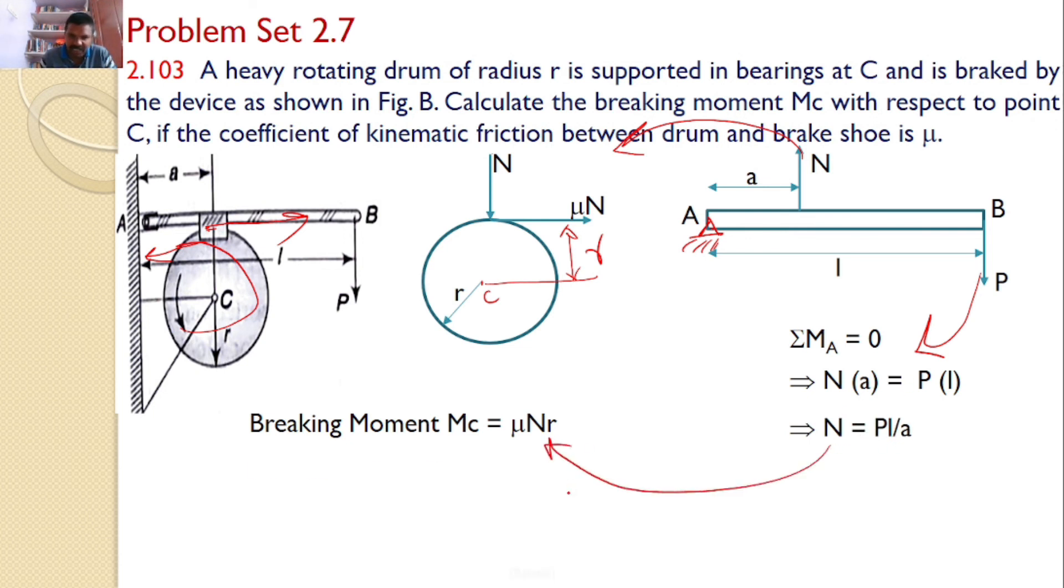Now, substitute this N here and then you can find the braking moment MC is equal to mu P L by A into R or the net moment MC is equal to mu into P L R by A is the answer.